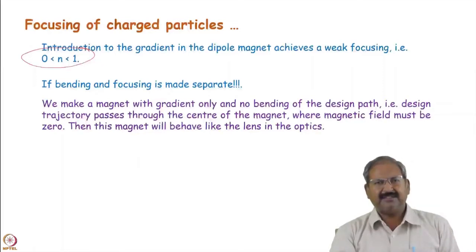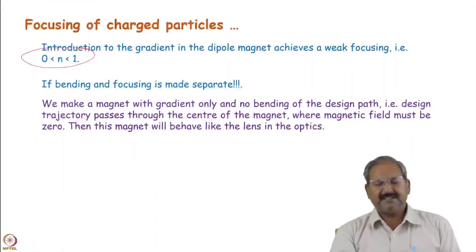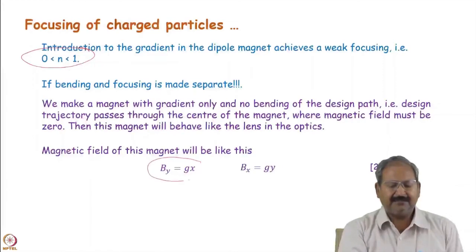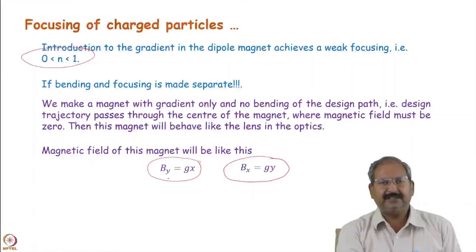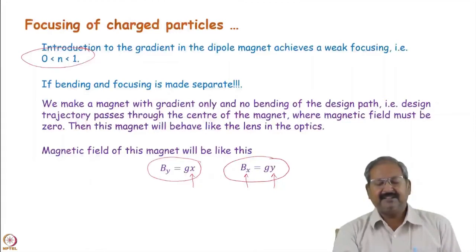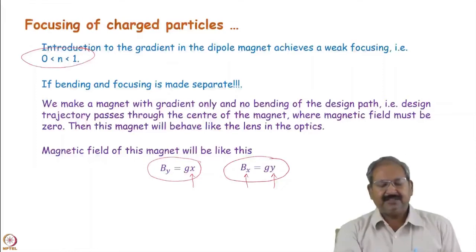Can we separate bending and focusing? Can we make a magnet with only a gradient and no dipolar component? In that case there is no bending of the design path, but focusing can still occur. This type of magnet would behave exactly like a lens in light optics — either a convex or concave lens. The answer is yes, if we can generate a magnetic field where the vertical component increases with horizontal displacement x, and the horizontal component increases with vertical displacement y.